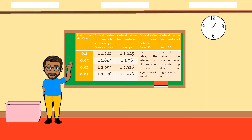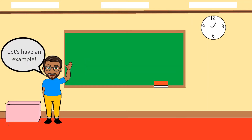For the critical value when the alternative hypothesis is non-directional or two-tailed, we have positive and negative 1.645. But if our sample is less than 30 and directional, we use the t-table. The intersection of the one-sided p, or the level of significance, and the df is our critical value. If the alternative hypothesis is non-directional and the sample size is less than 30, we use the t-table and look for the intersection of the two-sided p, the level of significance, and the degrees of freedom.